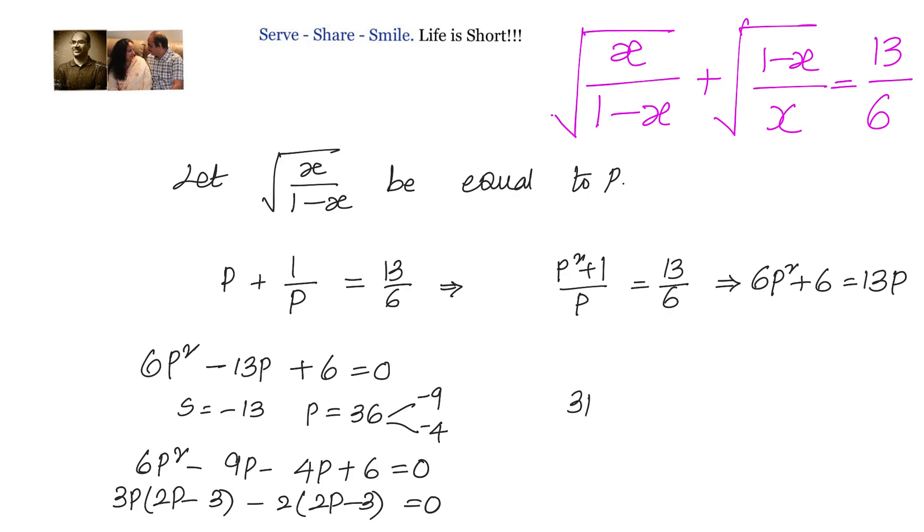So we have either 3p minus 2 equals to 0 or 2p minus 3 equals to 0. If 3p minus 2 equals to 0, then p equals to 2 by 3. If 2p minus 3 equals to 0, then p equals to 3 by 2. That means this value is equal to either 2 by 3 or 3 by 2.